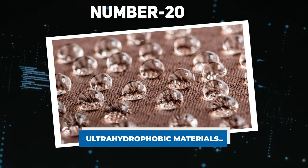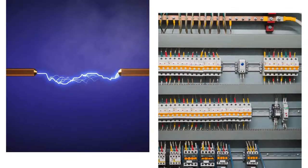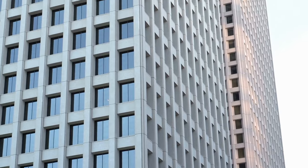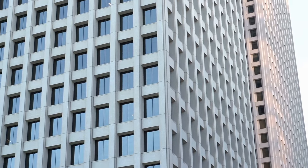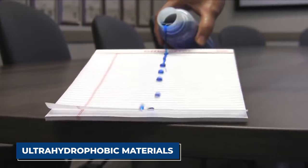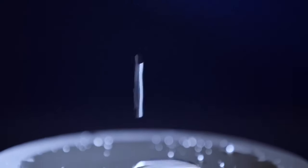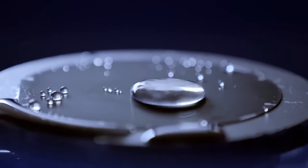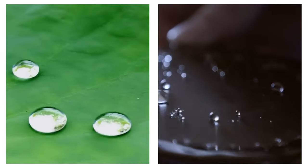Number 20: Ultra-hydrophobic materials. Imagine clothes that never get soaked, electronics that never short-circuit, buildings that repel rain like magic. This fantasy is approaching reality thanks to ultra-hydrophobic materials, substances engineered to spurn, deflect, and literally repel water in remarkable ways.